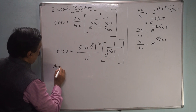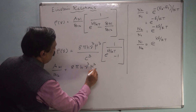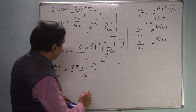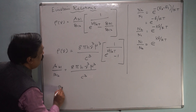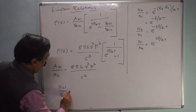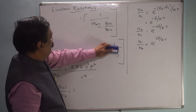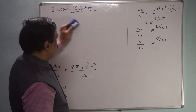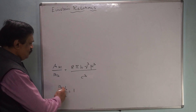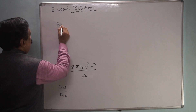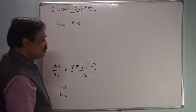By comparing the two equations, we get: A21/B12 = 8πhν³μ³/c³, and B21/B12 = 1, which means B12 = B21. These are the Einstein relations. B12 is the Einstein coefficient for absorption (level 1 to 2), and A21 is the coefficient for spontaneous emission (level 2 to 1).